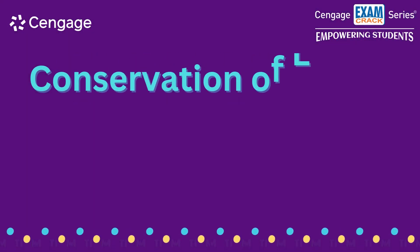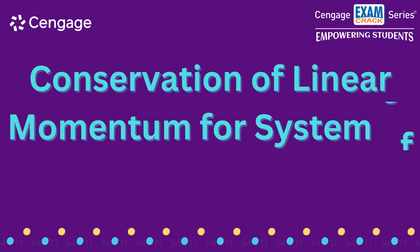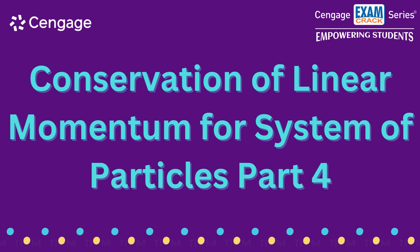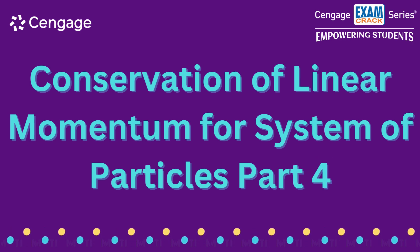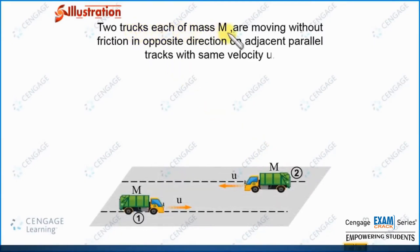Dear students, in this section we are going to discuss one very important concept of mechanics — conservation of linear momentum for a system of particles. In this illustration, we are given two tracks, each of mass capital M, moving without friction in opposite directions on adjacent parallel tracks with the same speed, same velocity U.